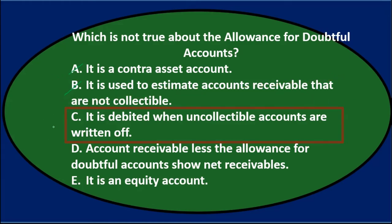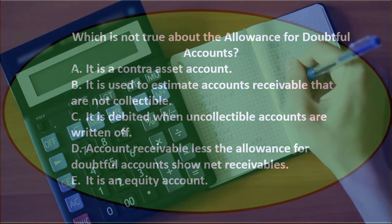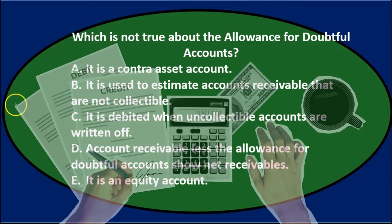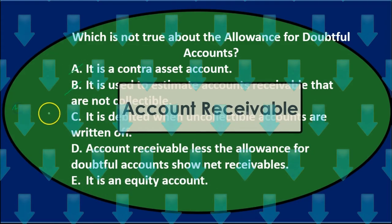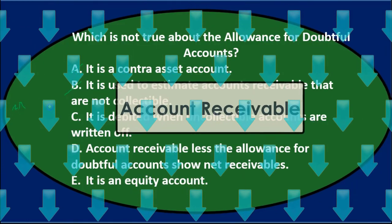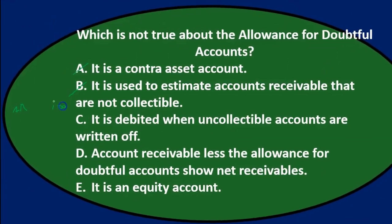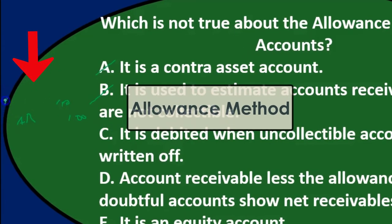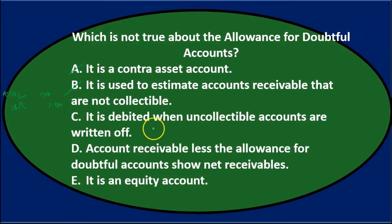C says it is debited when uncollectible accounts are written off. To figure that out, write the journal entry: if we write off an account, accounts receivable as an asset goes down with a credit of $100. Under the allowance method, the debit goes to the allowance account — not to bad debt expense. So the allowance is debited when uncollectible — that's correct, meaning C is not the right answer.